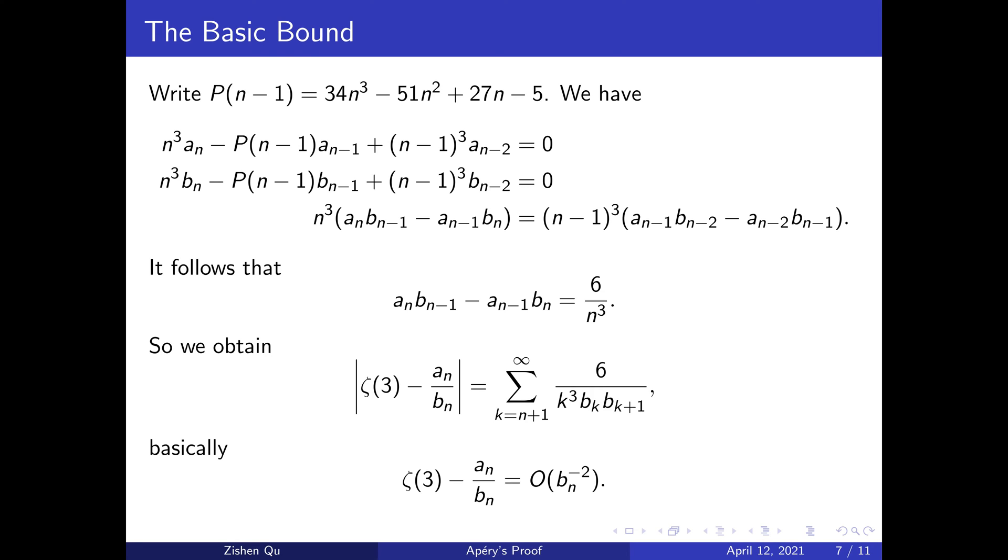We can compute a_0 b_1 - a_1 b_0 and simplify the telescoping product to find that a_n b_{n-1} - a_{n-1} b_n is 6/n³.